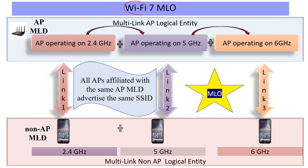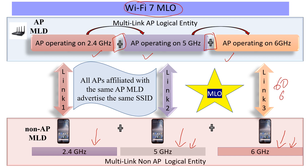Wi-Fi 7 multi-link operations is defined to help us combine multiple links in various ways — sometimes just switching between links, sometimes adding links depending on various capabilities and scenarios. The initial products are likely to have radios tuned to bands 2.4, 5, and 6 GHz. However, we can expect interesting product configurations with multiple radios, and possibly even an extension to 60 GHz in the future. The drivers for MLO have been peak throughput numbers, load balancing, and band steering challenges which Wi-Fi has faced for quite some time.